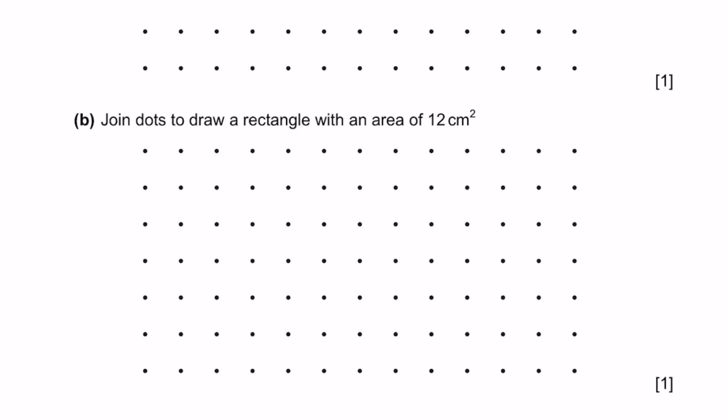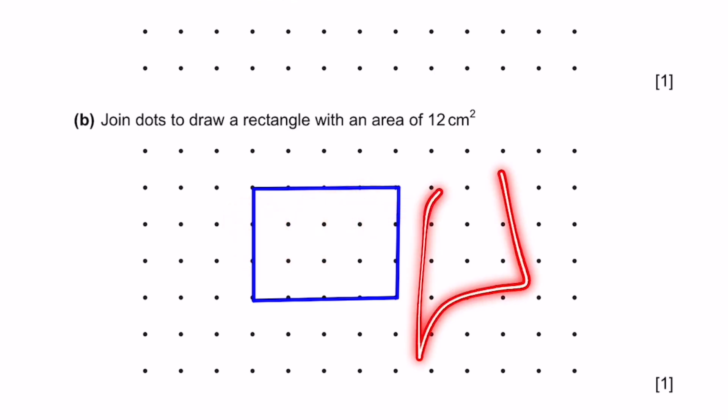B. Join dots to draw a rectangle with area of 12 centimeters squared. So that means length into breadth is equal to 12 centimeters squared. So for example, we can say 3 into 4. So the breadth is 3 and length is 4. That's the answer. There can also be 2 by 6 or 1 by 12 rectangles. And it can also be flipped to make it vertical. That's the answer.